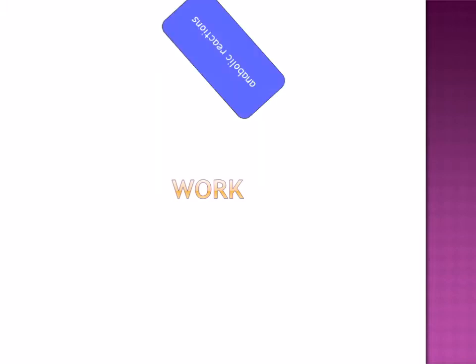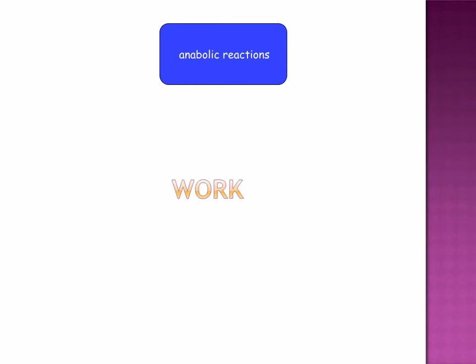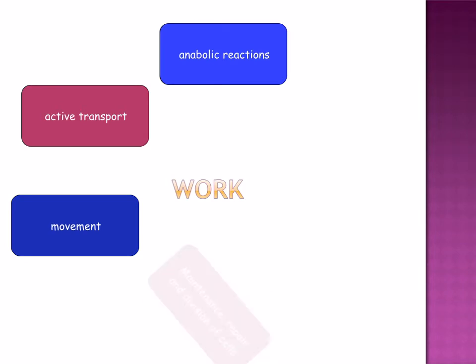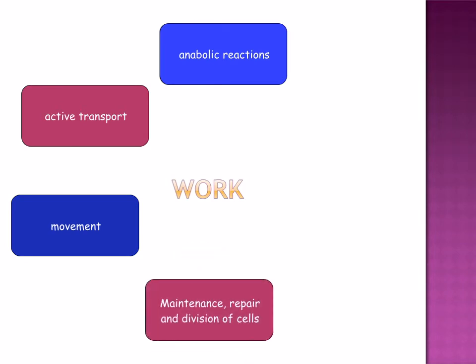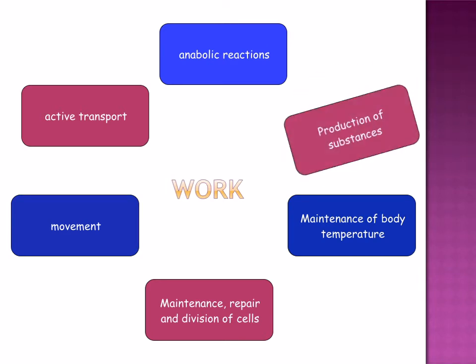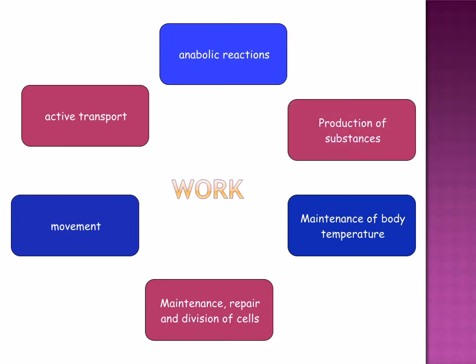Energy is required to do work. Here are some examples: energy is required for anabolic reactions, active transport, movement, maintenance, repair and division of cells, maintenance of body temperature, and the production of substances. Let's have a look at these in a little bit more detail.